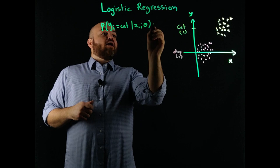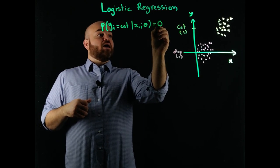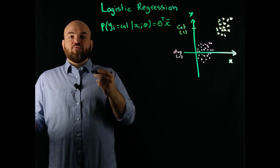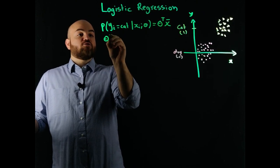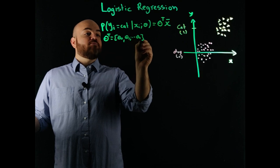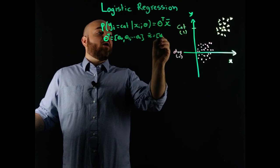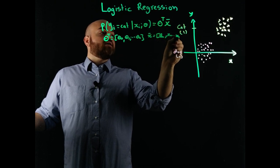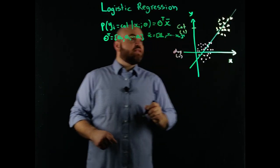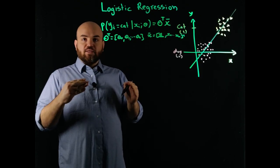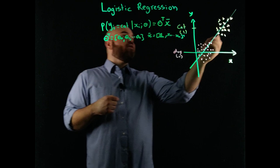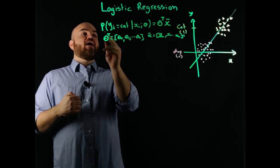So how do I do that? I could use a hypothesis similar to linear regression — theta transpose times x-bar — where theta transpose is the row vector of theta 0, theta 1, all the way to theta n, and x-bar starts with 1 and goes to x0 through xn as a column vector. I could fit this data with something that looks like a line, but if I want to find the probability of this value, I can't use a line because it can have a value larger than 1 or less than 0, which violates the definition of a probability.